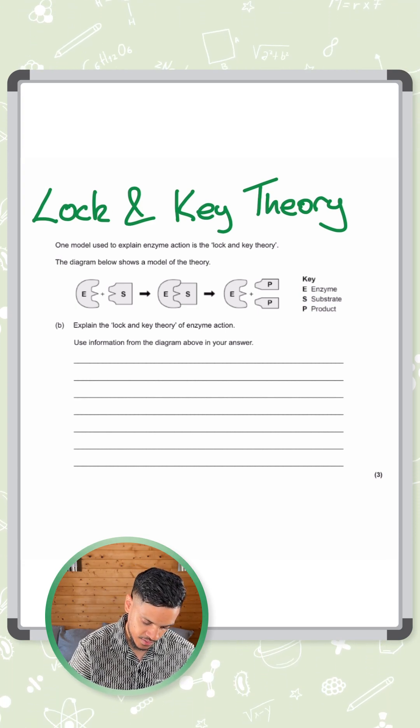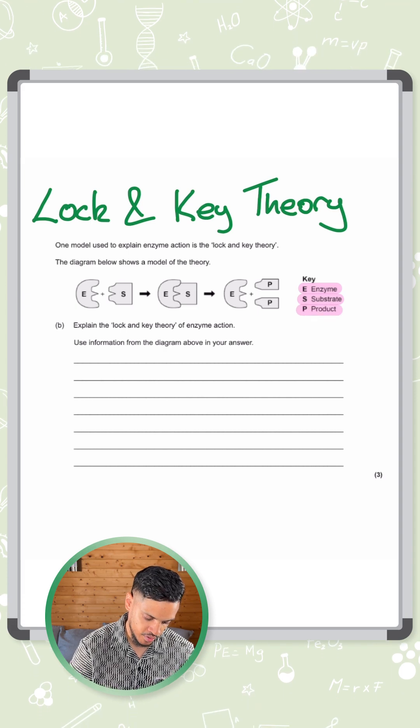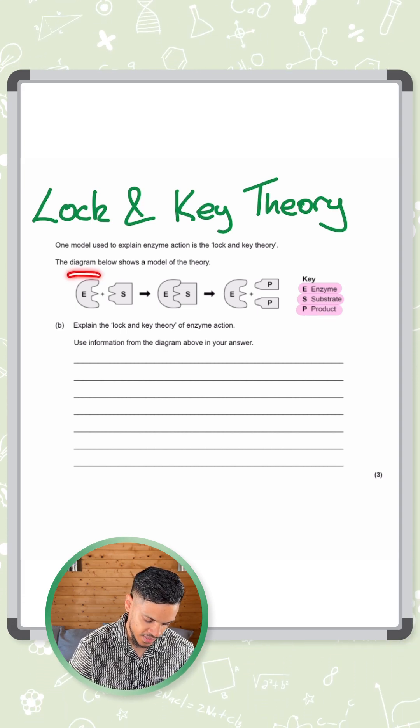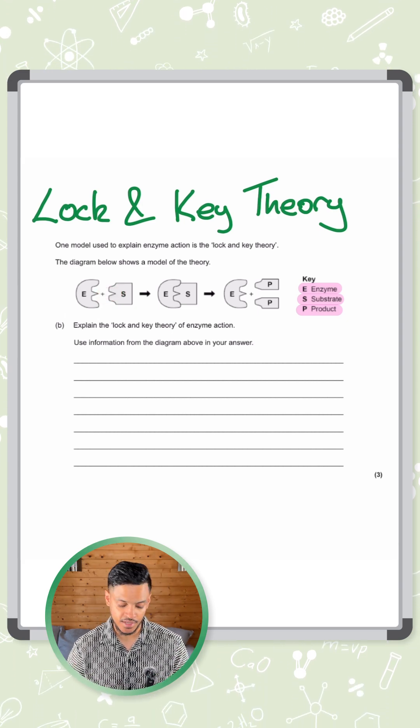They've given us a key so E is for enzyme, S is for substrate and P is for product. So what we can see here is we've got the enzyme and we've got the substrate going into the enzyme.